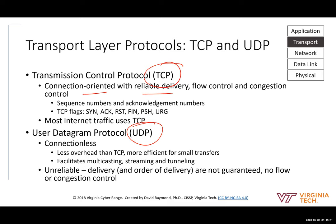UDP is a connectionless protocol — much lighter weight without all the extra error checking and guaranteed delivery. It's used for streaming situations like video teleconferencing or IP phone calls where adding all that extra overhead would consume too much bandwidth and cause jerky video. You can stream data over UDP very efficiently, so UDP is used for those kinds of streaming applications at the transport layer.